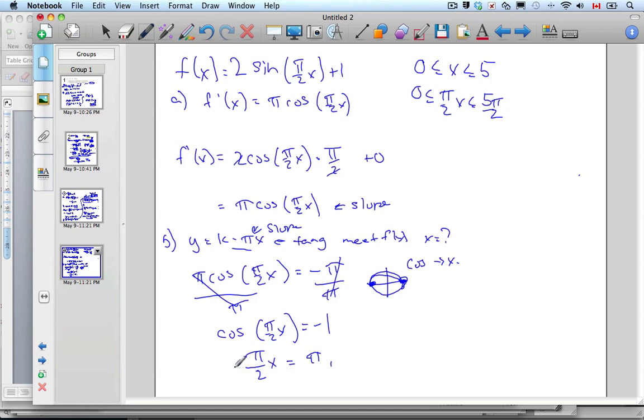Dividing now by pi. Well, I'm going to multiply actually by 2 over pi, multiplied by 2 over pi and x equals 2. This is where the tangent meets f of x.